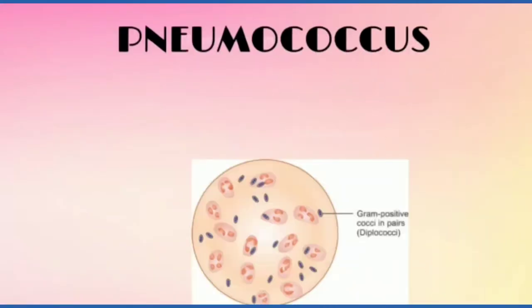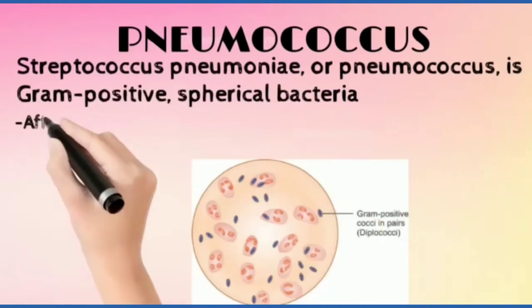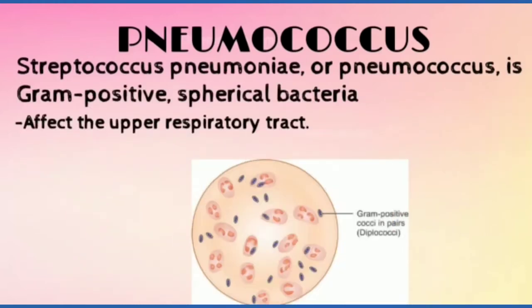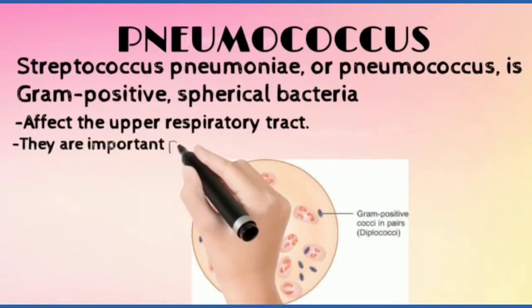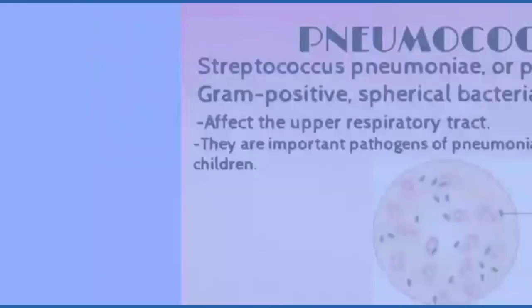Hello everyone. In this video we are going to talk about Pneumococcus, also known as Streptococcus pneumoniae. These are gram positive and spherical bacteria that affect the upper respiratory tract. They are important pathogens of pneumonia and otitis media in children.